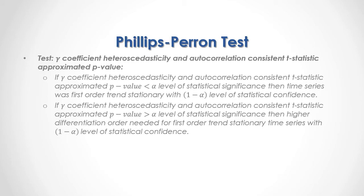What we're testing is the gamma coefficient heteroskedasticity and autocorrelation consistent T-statistic approximated p-value. If this p-value is less than the alpha level of statistical significance, then the time series was first-order trend stationary with a 1-minus-alpha level of statistical confidence. On the other hand, if the p-value was greater than alpha, then a higher differentiation order is needed for a first-order trend stationary time series.